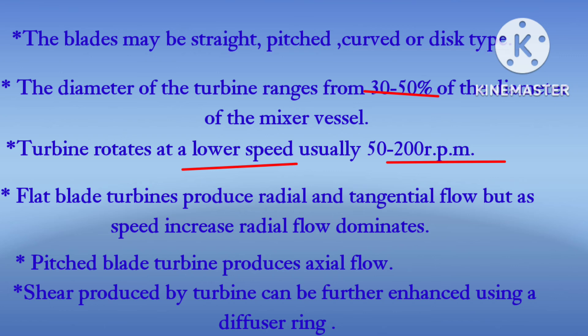The flat blade turbine produces radial and tangential flow, but as speed increases the radial flow predominates. The pitched blades produce axial flow. Near the impeller zone, rapid currents, high turbulence, and intense shear are observed. The shape of the turbine can be further enhanced using a stator ring, which is a stationary peripheral ring that surrounds the turbine.